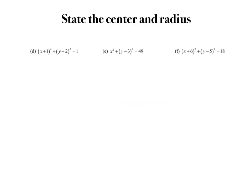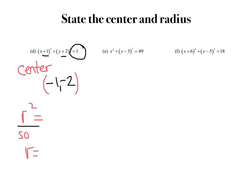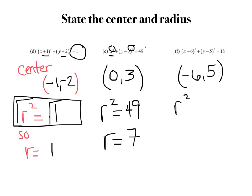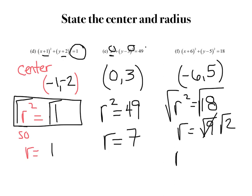Our goal in the next questions is just to state the center and the radius for problems d, e, and f. For the first: I see positive 1, positive 2, so my center is negative 1, negative 2 — taking both opposites. Remember, this is r squared, so r squared equals 1, and r equals 1. The second: no value added to x, so the x-coordinate of center is 0, and positive 3. R squared equals 49 because everything is squared, so radius equals 7. Lastly, center is negative 6, positive 5; r squared equals 18, so r equals 3 radical 2.